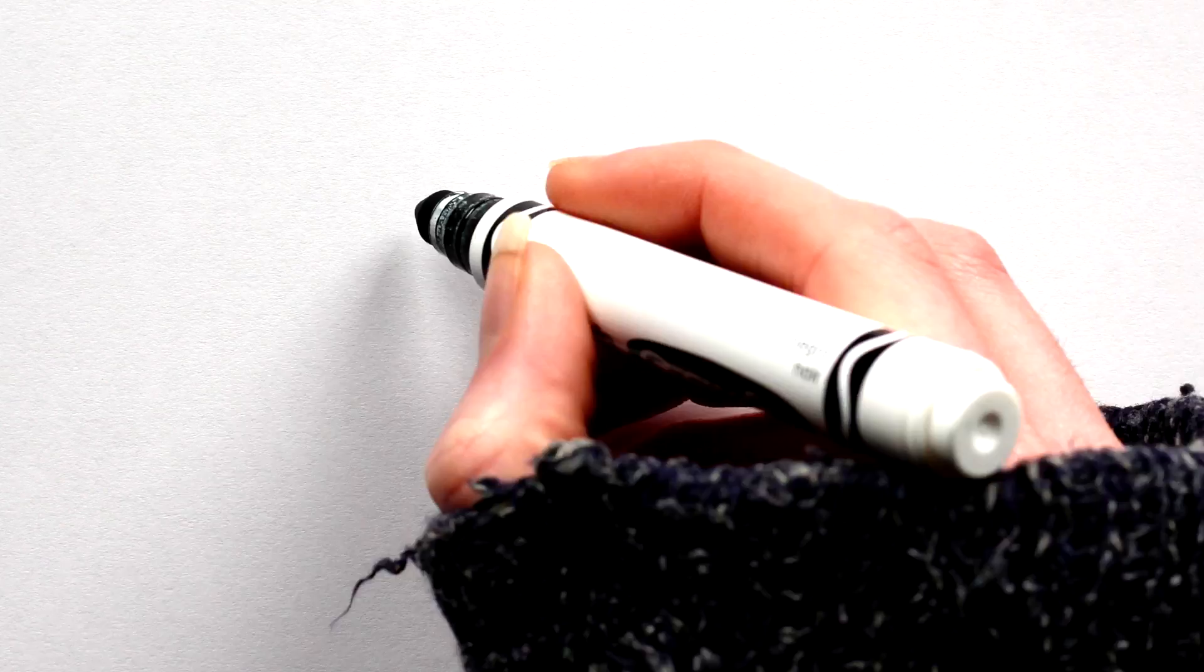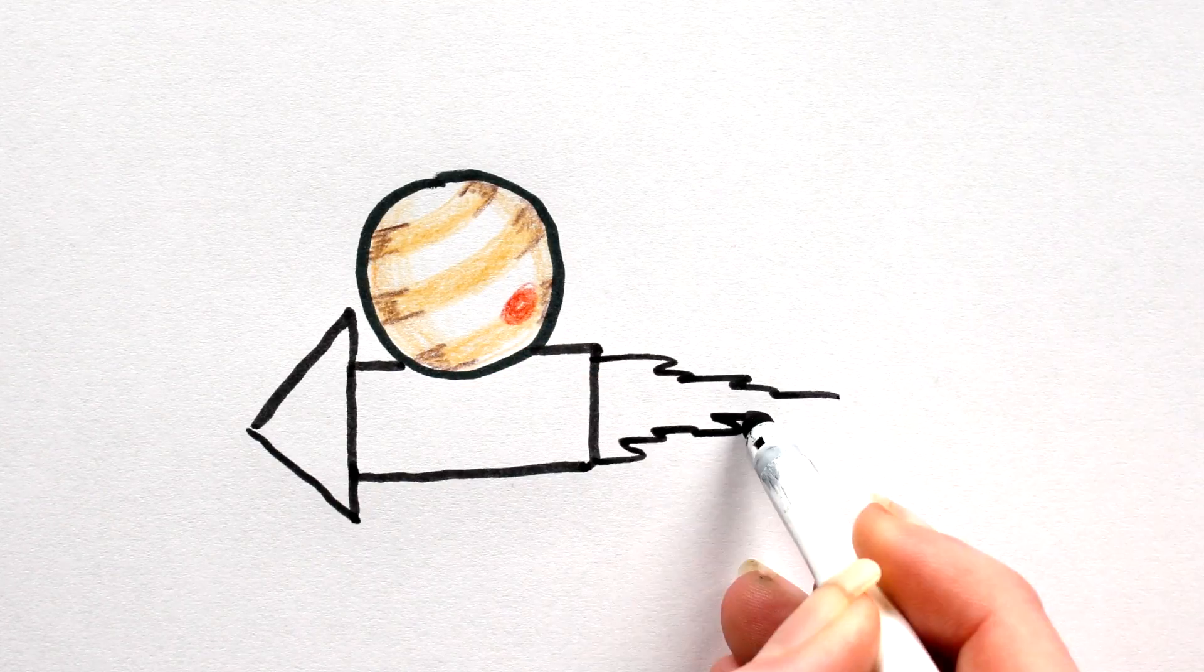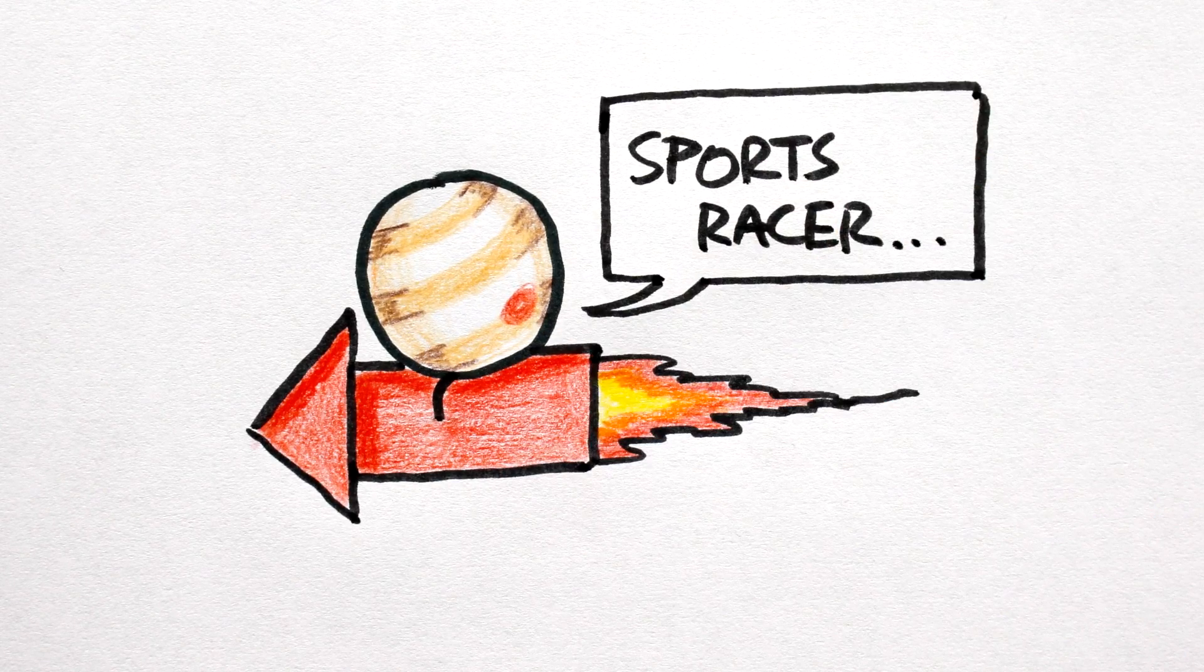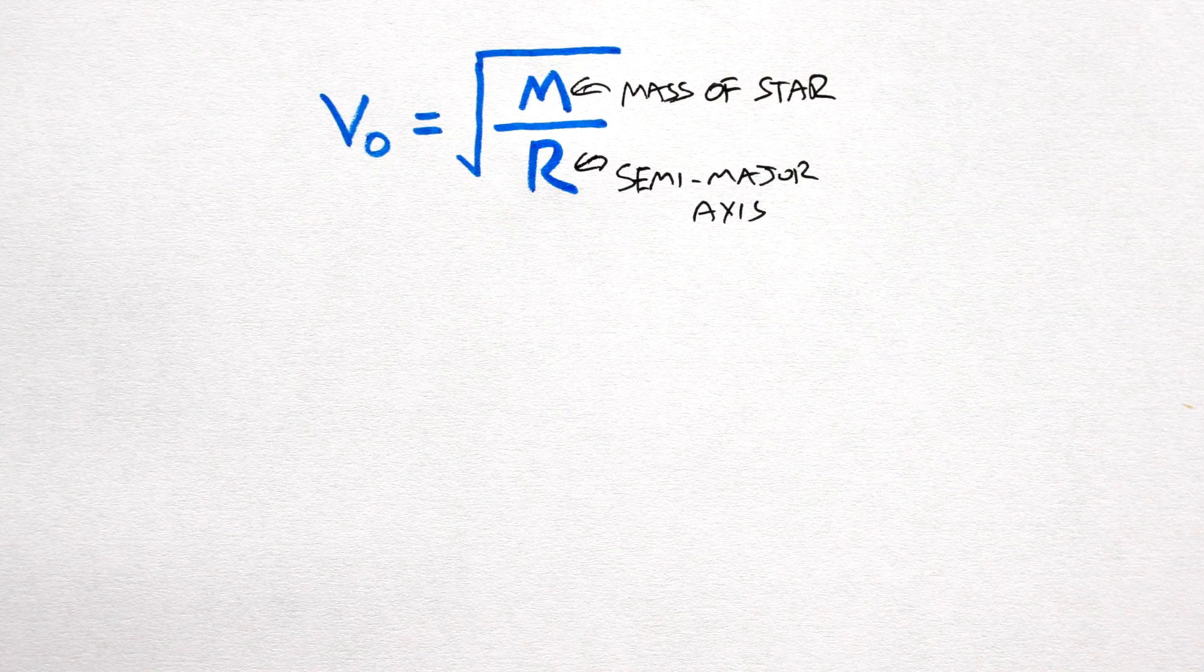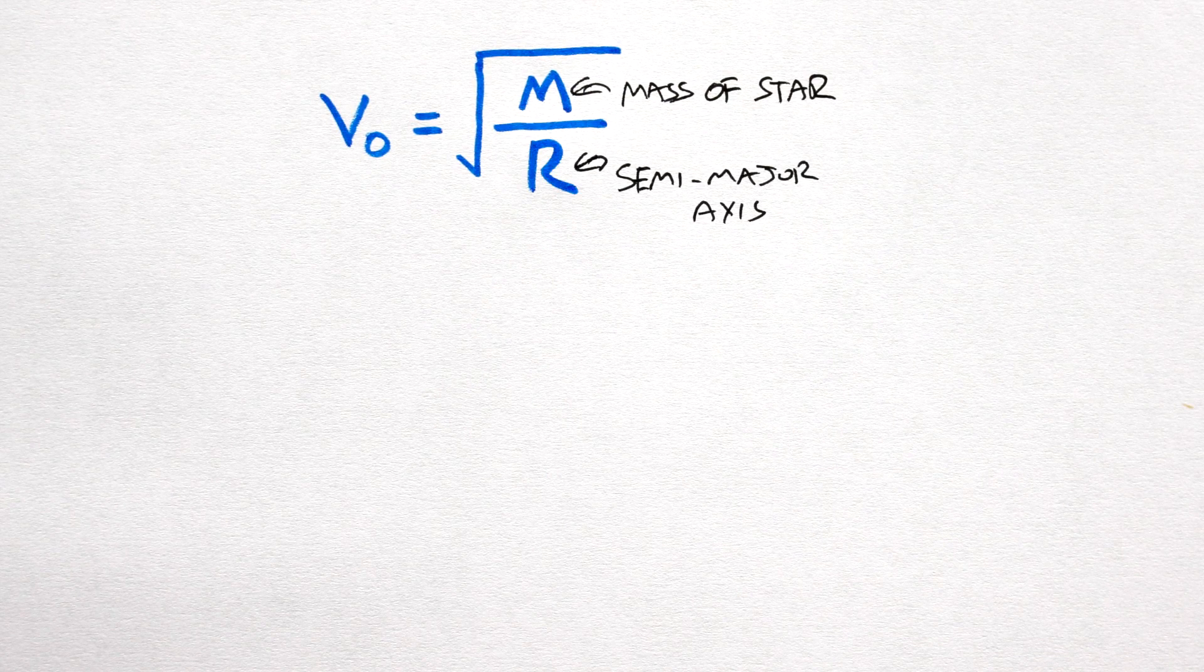Orbital velocity. So given that our hot Jupiter orbits so close to its star, it must be orbiting at a serious speed. This speed, or orbital velocity, is given by the square root of M divided by R, where M is the mass of our star and R is the average separation, so the semi-major axis.